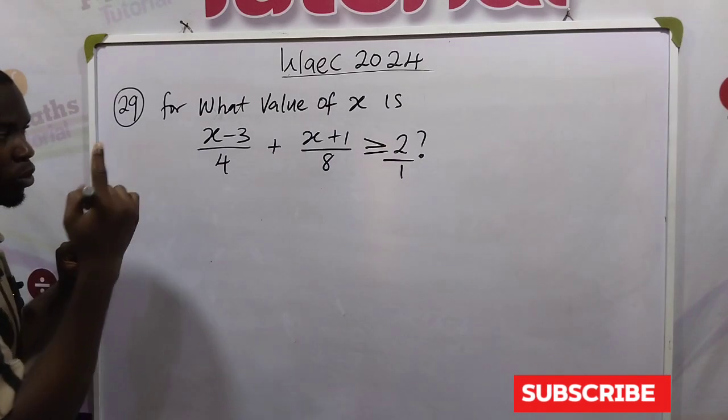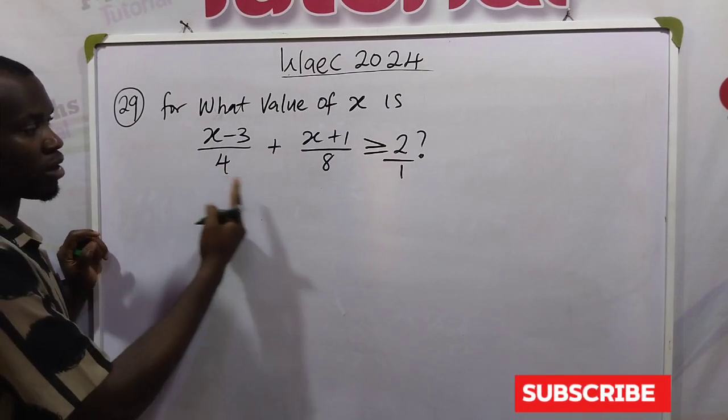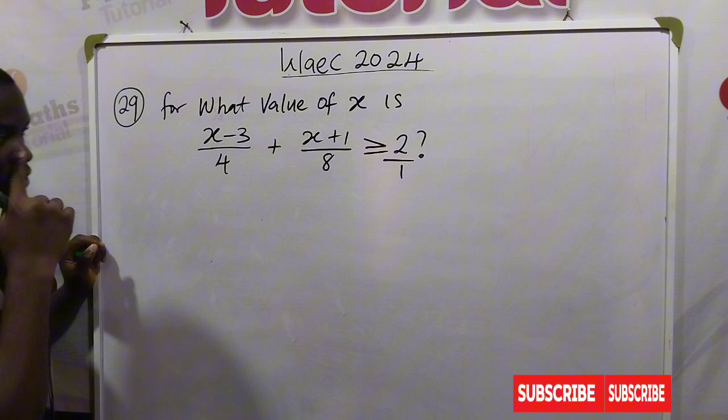Let's put 1 here. What is the biggest number that 4 and 8 can divide? That is 8.